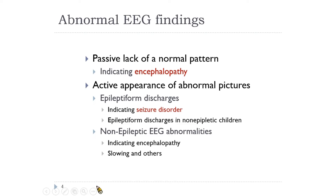Abnormal EEG consists of the passive lack of normal patterns indicating encephalopathy, and the active appearance of abnormal pictures, which are grossly classified into epileptic and non-epileptic abnormal discharges. Beware that epileptic abnormal discharges could be seen in non-epileptic children — again, this is a characteristic of the young population.